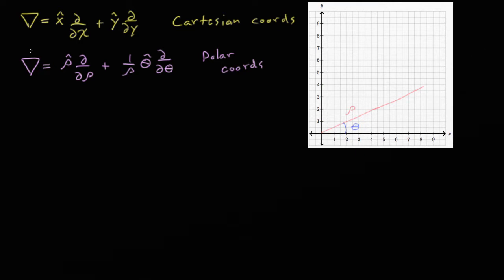Let's try to make sense of the formula for the del operator in polar coordinates. If we first look at the formula in Cartesian coordinates, we see that the variables are completely independent from one another. There's an x term with an x hat, this is the unit vector in the x direction, and then a partial with respect to x.